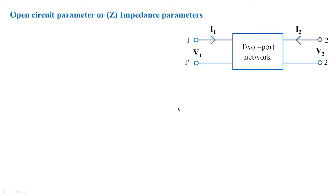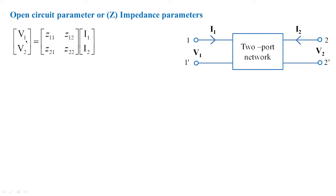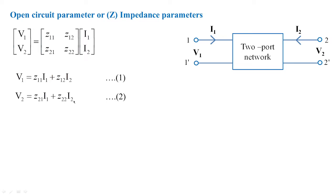As we know from the previous classes, the Z parameters are given by: v1 = z11·i1 + z12·i2, and v2 = z21·i1 + z22·i2. These are open circuit parameters, and the Z parameter matrix is written as [z11, z12; z21, z22].